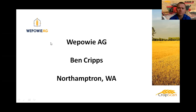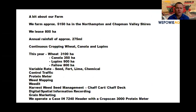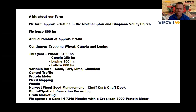A bit about us: myself and our family farm a bit over 5,000 hectares in the Northampton/Chapman Valley shires, about 100 km north of Geraldton in Western Australia. We lease about 800 hectares, our annual rainfall is about 275mm, and we continuously crop wheat, canola, and lupins, using the grain analyzer across all of those crop types. This year we've got 3,100 hectares of wheat, 350 of canola, 900 of lupins, and 800 hectares of fallow.